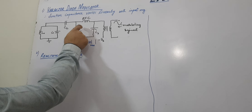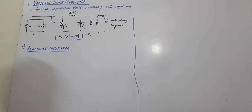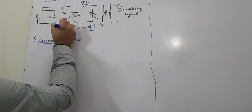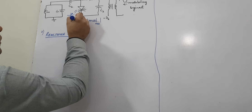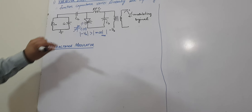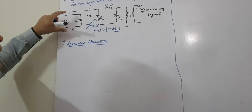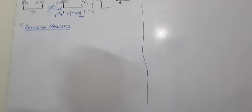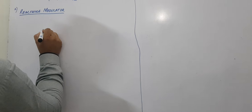If this diode is reverse biased, the capacitance of that diode will vary linearly in accordance with the modulating signal. This means the diode is working like a variable capacitor C(t). If the capacitance of the diode varies linearly with the input message signal, we are going to generate the FM signal directly using this circuit. The second method is the reactance modulator, and for the reactance modulator we are using a FET.